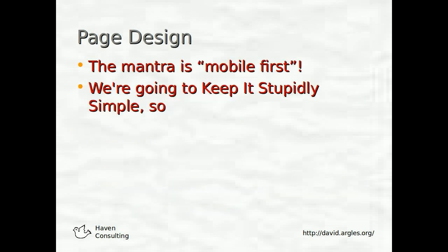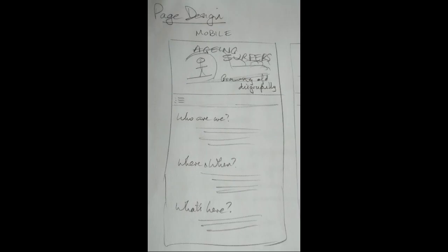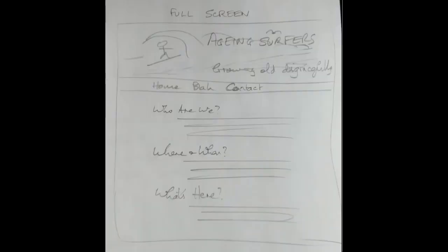That's most of the planning, but we also need to think about page design. The mantra is mobile first. We're going to keep it stupidly simple — so here's the mobile design: we'll have some sort of graphic, preferably an older guy surfing, then the navigation section, then the content. We'll focus on the three things we need, starting with what the site is all about, with more detail in the various sections underneath. Then, if we're on a bigger laptop screen, we'll expand the design a bit.